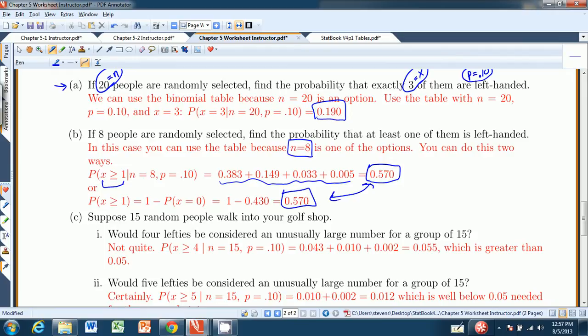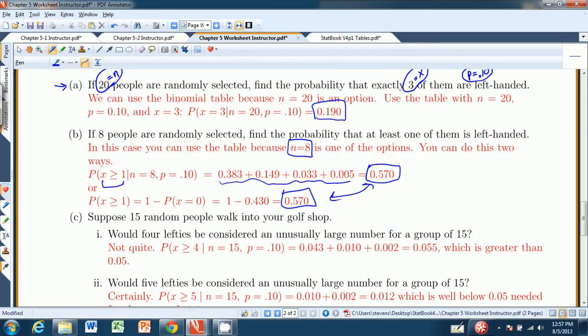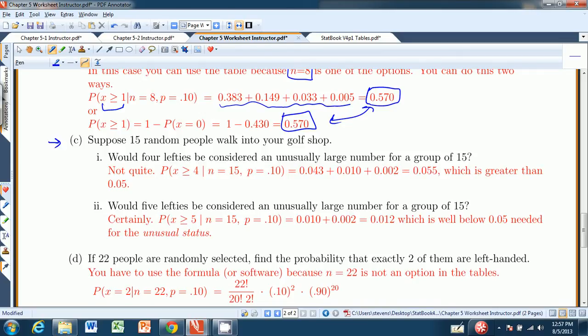So the idea is you can add up all those numbers I just showed you, and you get .57. Or you can take one minus the probability of zero, .430, and you get the same answer, .570. Now these two methods won't always necessarily agree. Only because sometimes these starred values add up to something meaningful. Back to the worksheet. Suppose 15 people walk into your golf shop. Would four lefties be considered an unusually large number in a group of 15? Well, let's face it, if n equals 15, and the probability of getting a single lefty is .1, then you'd expect about 1.5 lefties. And so the question is, if four of them are lefties, is that an unusually large number?